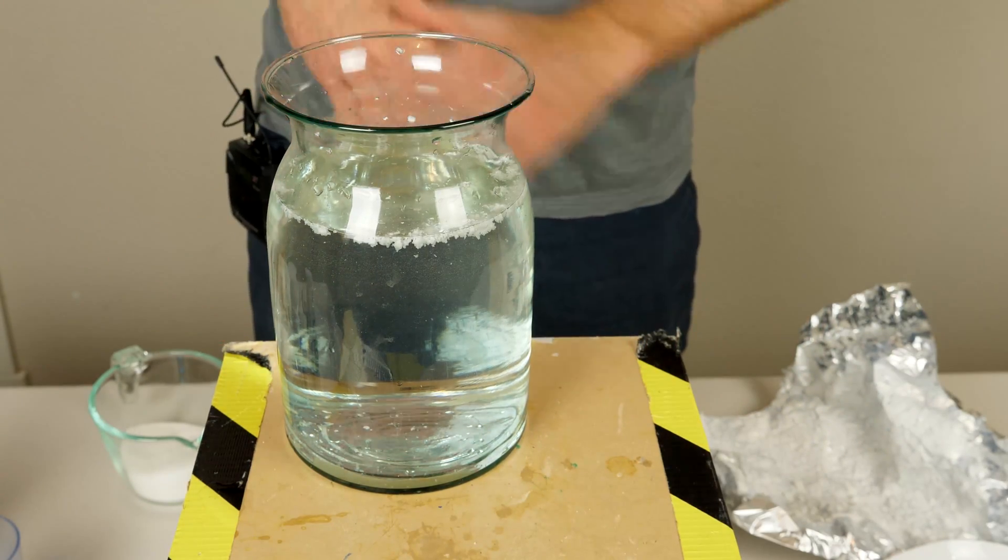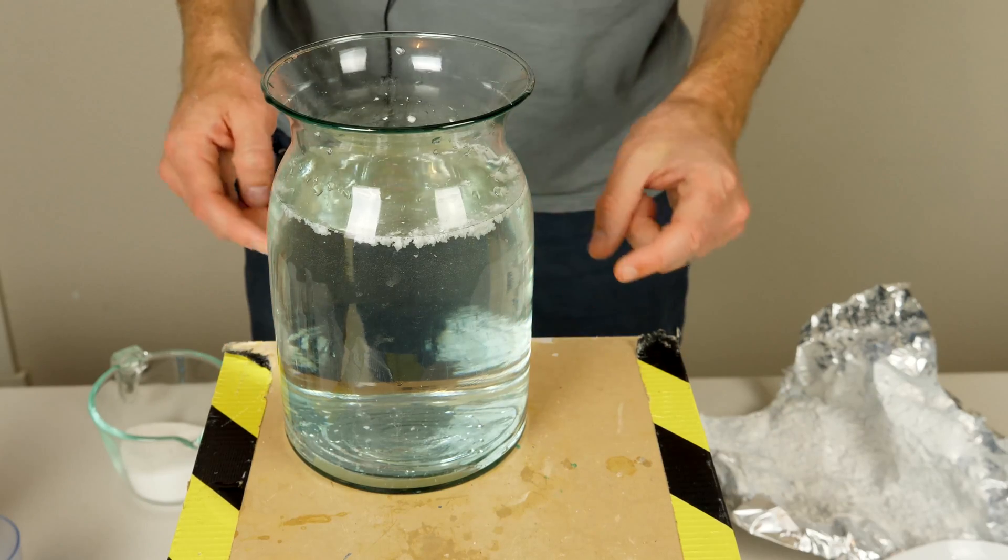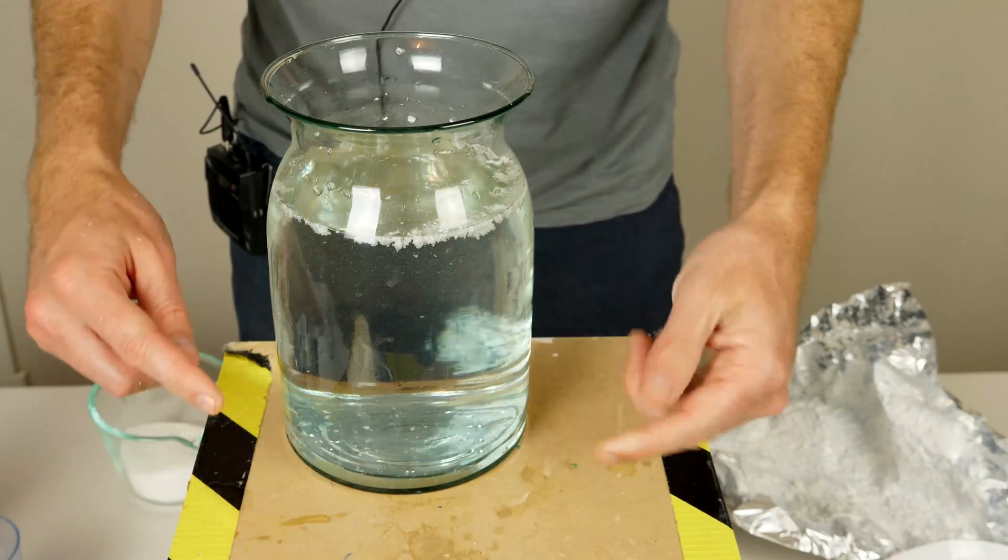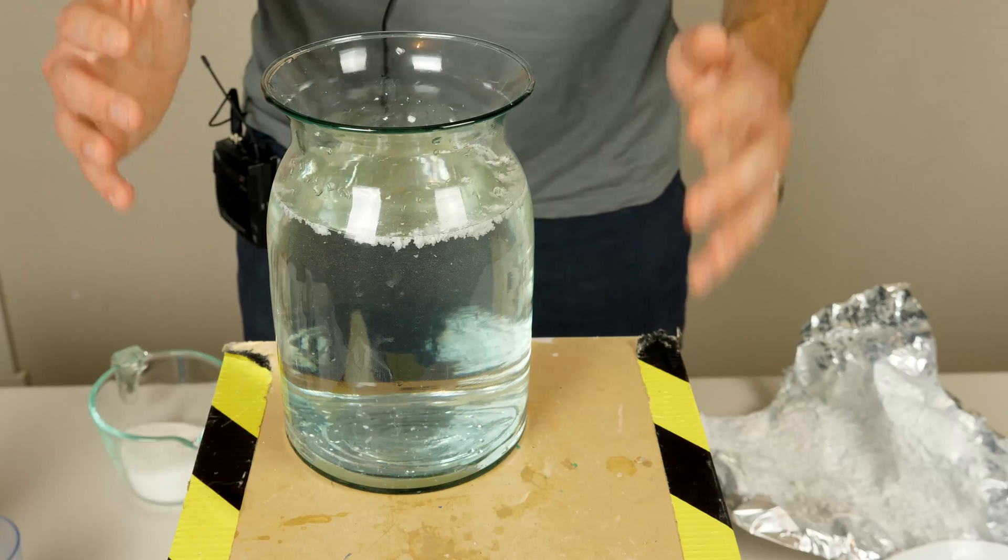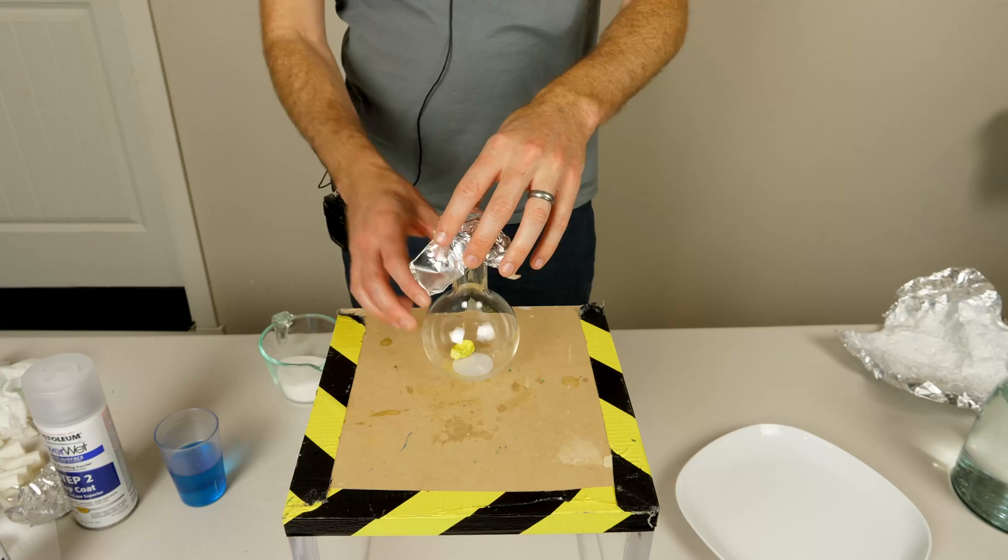So things aren't looking too good for my objects that I've coated with NeverWet. Looks like it was able to soak into the bread and the sugar. The final test now is the sodium.